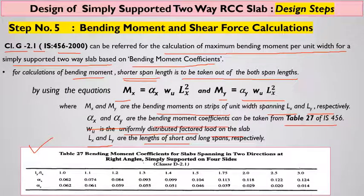This is a snapshot of Table 27, titled 'Bending Moment Coefficients for Slabs Spanning in Two Directions at Right Angles, Simply Supported on Four Sides.' This table is applicable when designing a two-way slab that is simply supported.